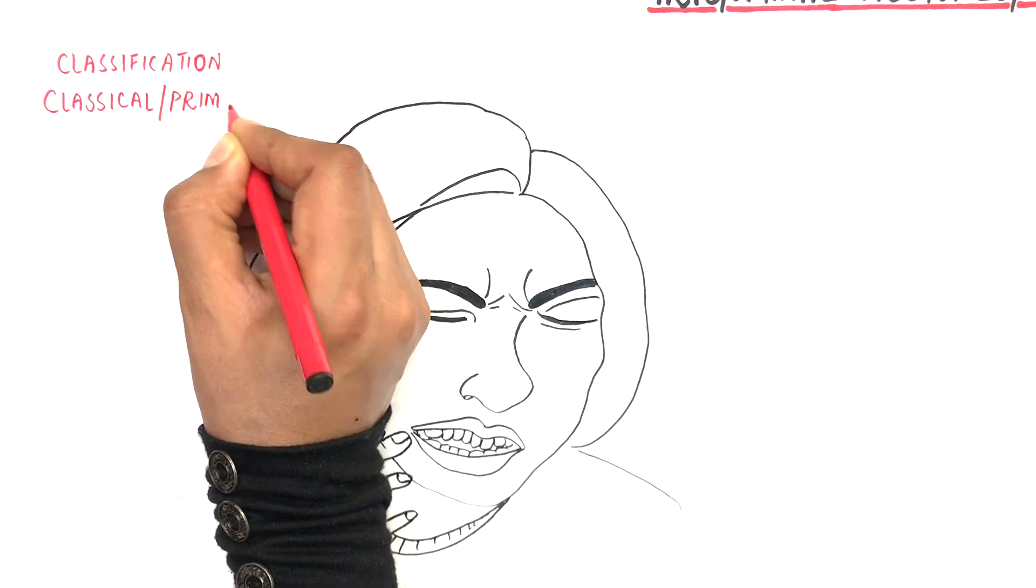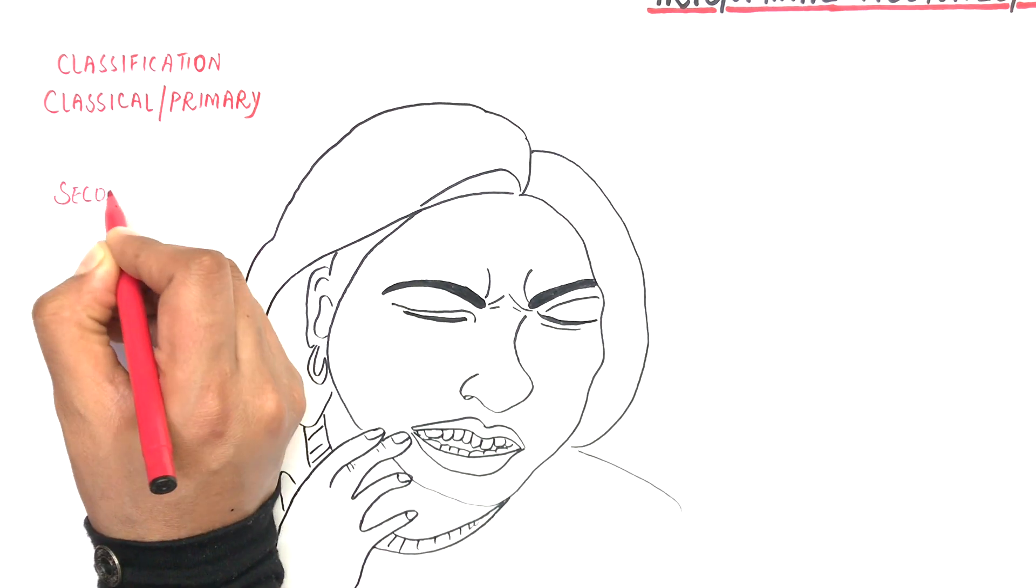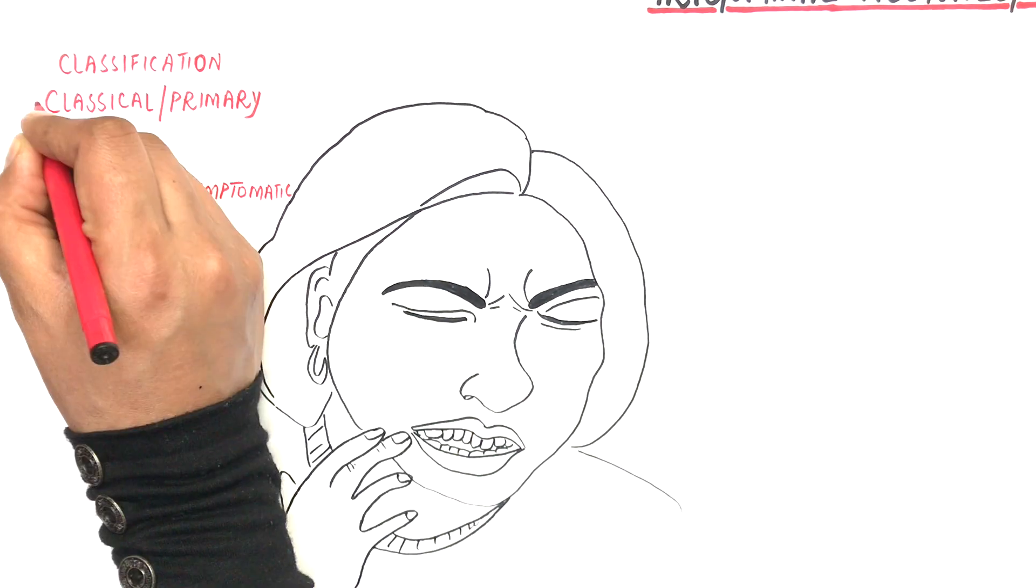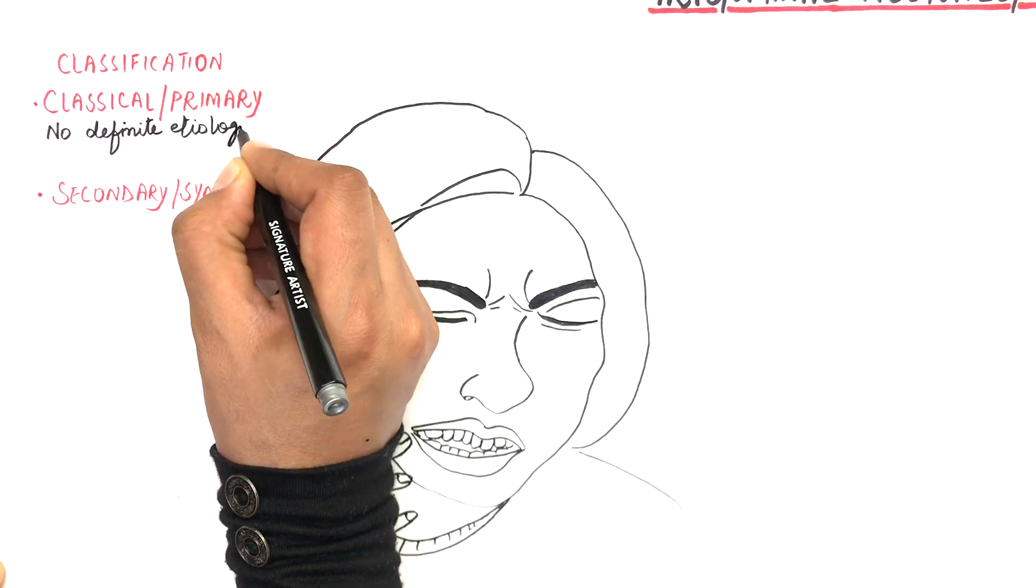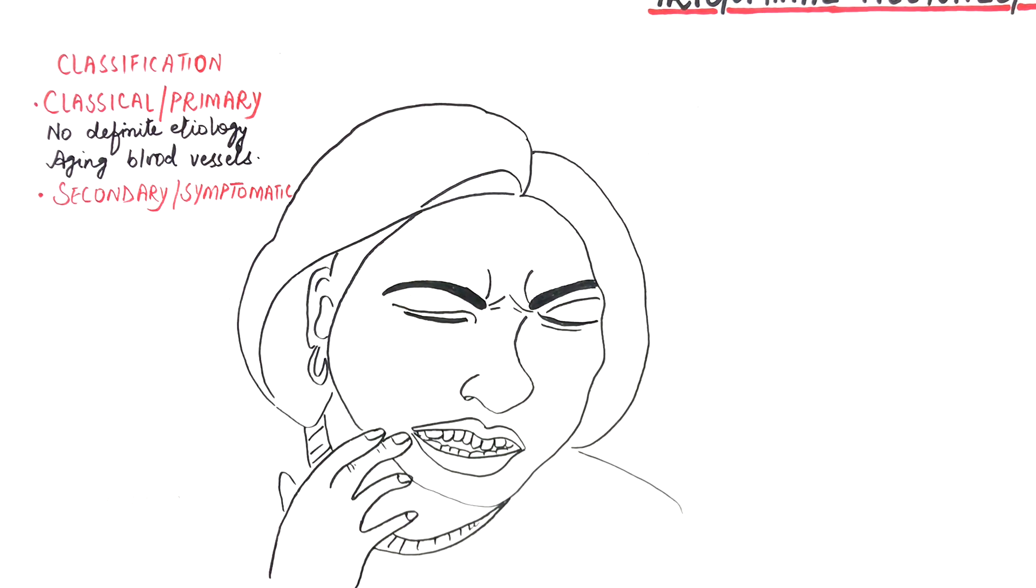Trigeminal neuralgia can be classified as classical or primary and secondary or symptomatic. The classical or primary trigeminal neuralgia has no definite etiology, although it's often thought to be related with compression of the trigeminal nerve by aging blood vessels, which makes the nerve susceptible to localized demyelination.